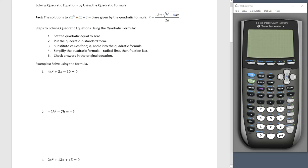Let's take a look. First step: set the quadratic equal to zero. So 4x squared plus 3x minus 10 equals zero is already equal to zero, already in decreasing standard form. I'm going to write a equals 4, b equals 3, and c equals negative 10.